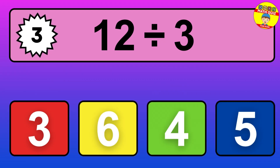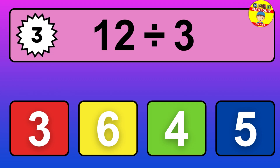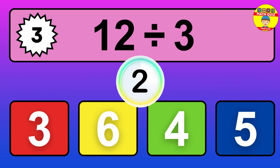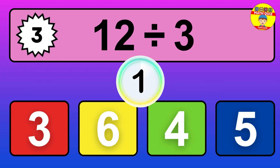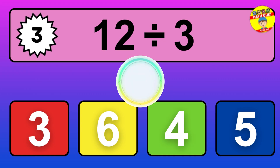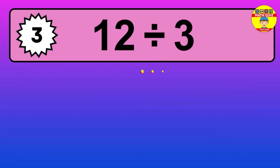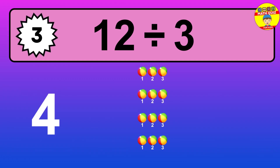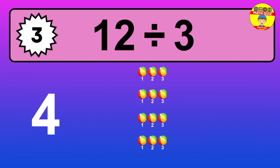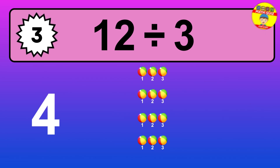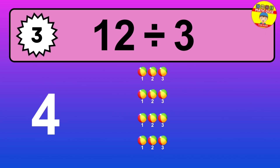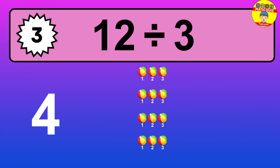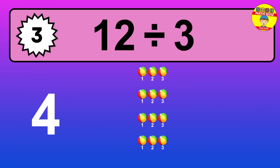12 divided by 3 — it's time to think. Let's go to the solution. Divide the number 12 by 3. Each group contains 3 units, so dividing 12 by 3 results in 4 equal groups. Thus, the result is 12 divided by 3 equals 4.